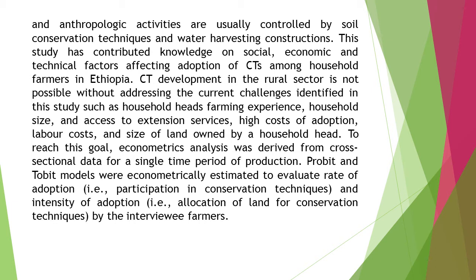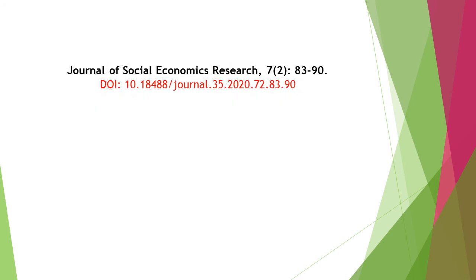To reach this goal, econometric analysis was derived from cross-sectional data for a single time period of production. Probit and Tobit models were econometrically estimated to evaluate rate of adoption — i.e., participation in conservation techniques — and intensity of adoption — i.e., allocation of land for conservation techniques — by the interviewee farmers. Thanks for watching this video of Journal of Social Economics Research, Volume 7, Issue Number 2.